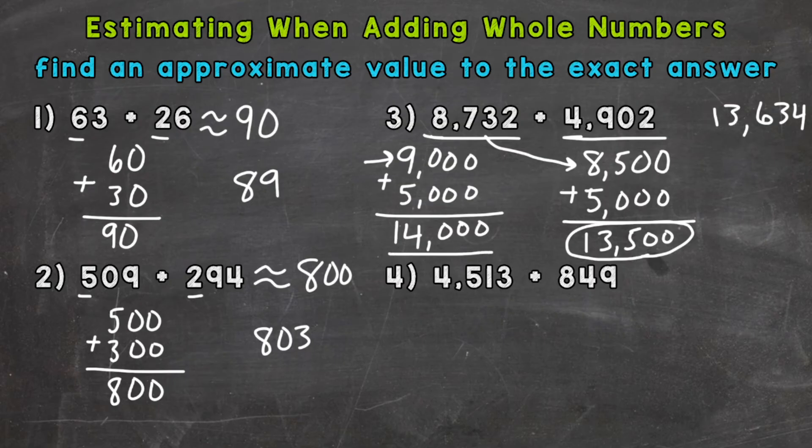Now 14,000, this is still a good estimate. Both are fine. 13,500 is just closer. There's no specific set rules for estimating. So whatever works best for you, whatever strategy works best for you.